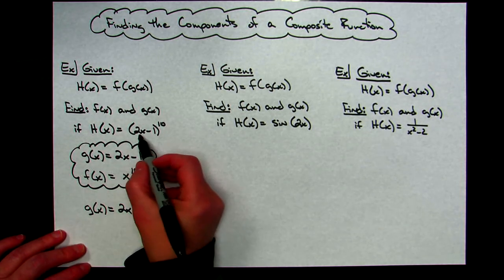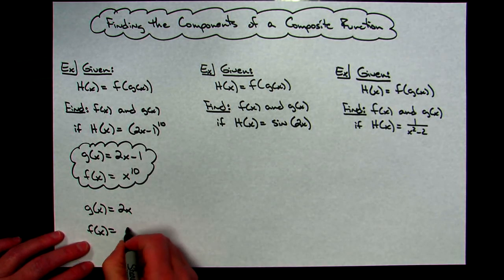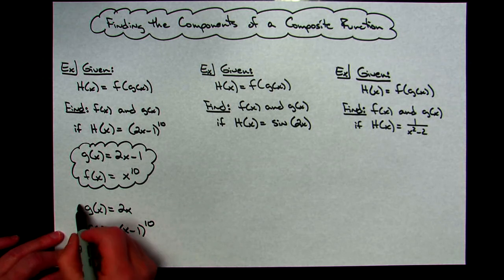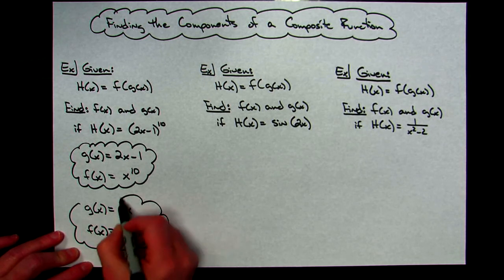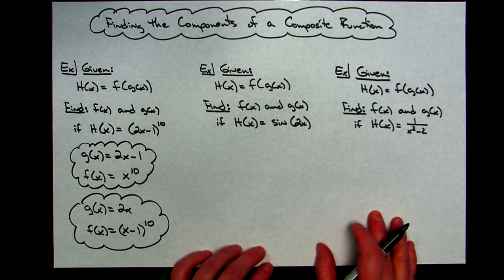well then the outside function would have to be everything else. So what would I have plugged it into? My f of x function then would have to be the x minus 1 raised to the tenth power. So the only reason I did that is just to show you answers are not unique. You can do these generally more than one way.